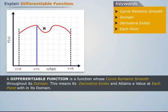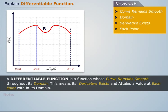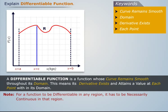Thus, a differentiable function is a function whose curve remains smooth throughout its domain, meaning its derivative exists and attains a value at each point within its domain. Note that for a function to be differentiable in any region, it has to be necessarily continuous within that region.